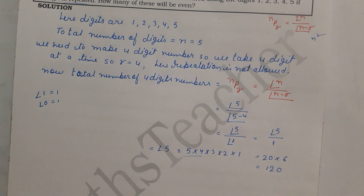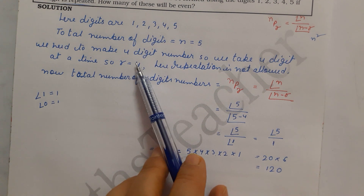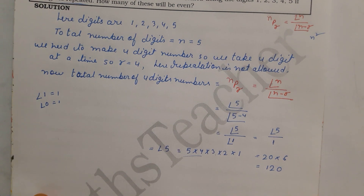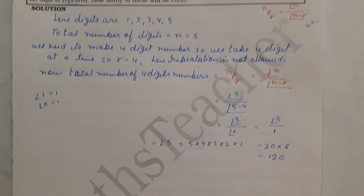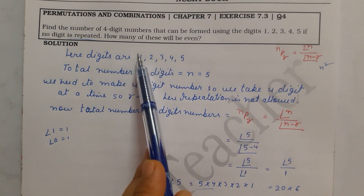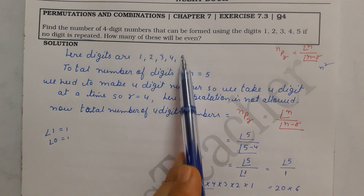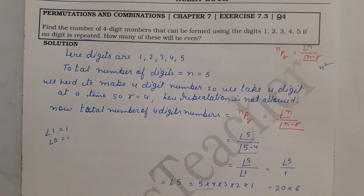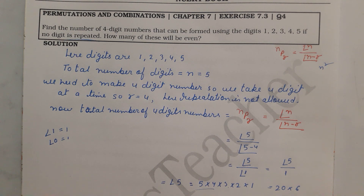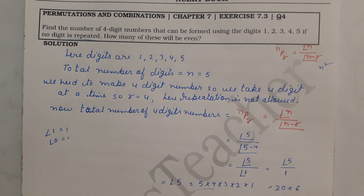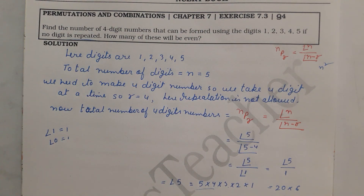So we will get 120 four-digit numbers where there is no repetition. Now let's move to the second part: how many of these will be even? Note that there is no 0 in our digits 1, 2, 3, 4, 5. If 0 were present the conditions would be different, but since there is no 0 this question is simply solved.